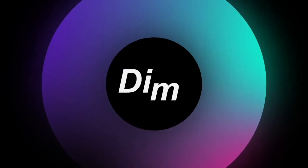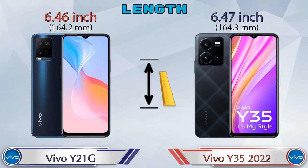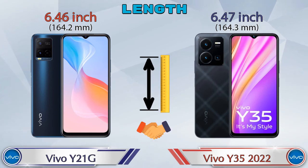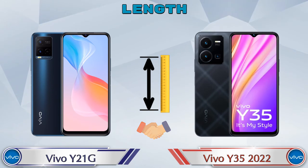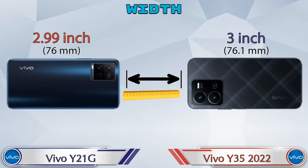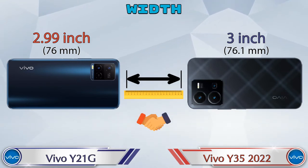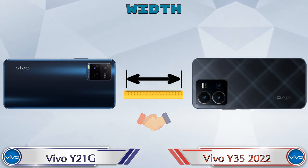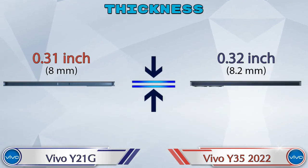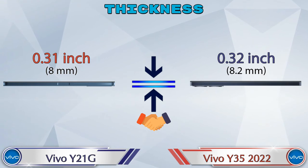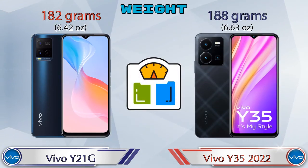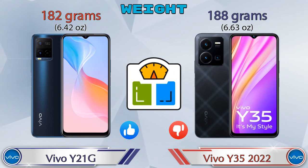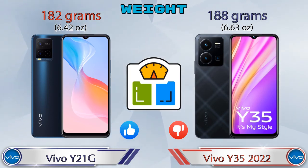Now we check the details about dimensions. Talking about the length of both phones: Y21G has 6.46 inches and Y35 2022 has 6.47 inches, which are almost the same. Width: Y21G has 2.99 inches and Y35 2022 has 3 inches, almost the same. If we talk about thickness, Y21G has 0.31 inches and Y35 2022 has 0.32 inches, which is almost similar. Talking about weight, Y21G is 182 grams and Y35 2022 has 188 grams, which is heavier than Y21G.